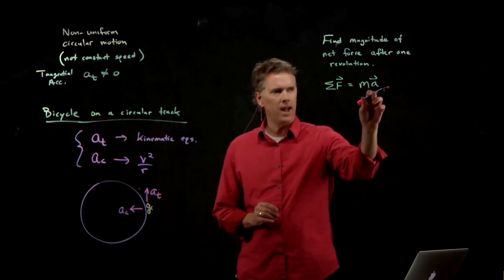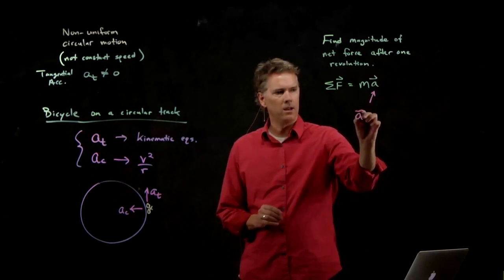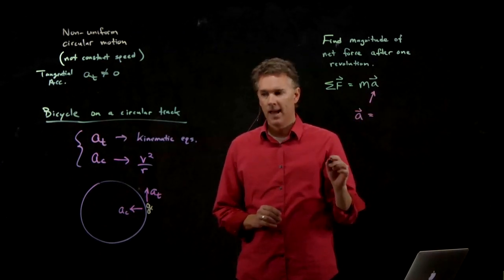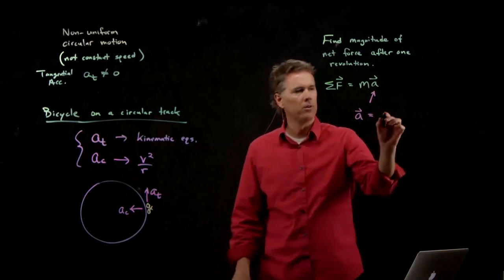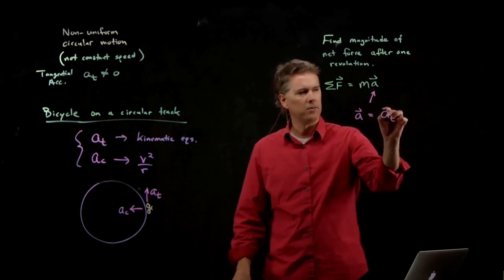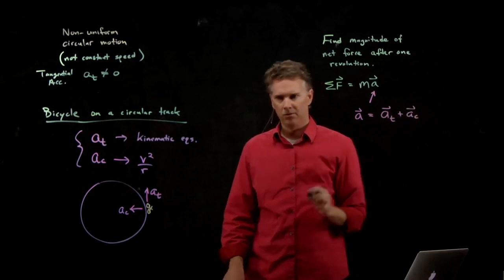To the left. So what does this a look like? The vector a is a vector sum of those two. It's a_t plus a_c.